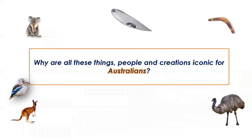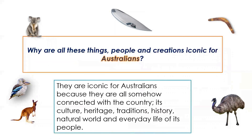Why are all these things, people and creations iconic for Australians? They are iconic for Australians because they are all somehow connected with the country — with its culture, heritage, traditions, history, natural world, and everyday life of its people. Please look through the video and summarise the information about Australia.